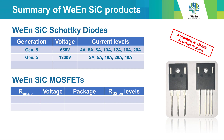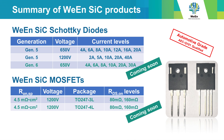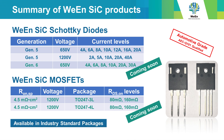On this slide we see a summary of the Wien silicon carbide products: the silicon carbide Schottky diodes and the Wien silicon carbide MOSFETs. All these parts come in industry standard packages.